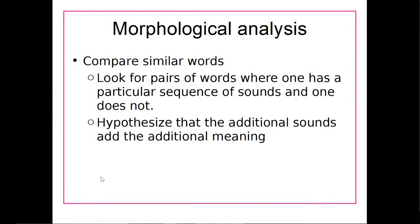Another way to look at morphological analysis is that we can look at pairs of words where one word has a certain sequence of sounds and one does not, and then hypothesize that the additional sounds add additional meaning. Basically, the one sound that stays the same between words will probably correspond to a certain part of the meaning staying the same — as we just saw with 'o' always indicating first person subject. That's the basics of morphological analysis.